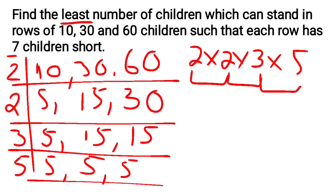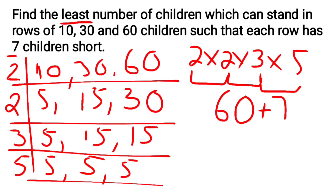Multiplying: 2 times 2 is 4, 4 times 3 is 12, 12 times 5 is 60. So the LCM is 60. Since each row is 7 children short, the final answer is 60 plus 7 equals 67.